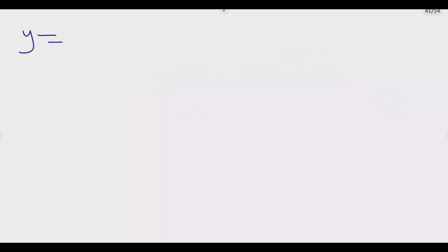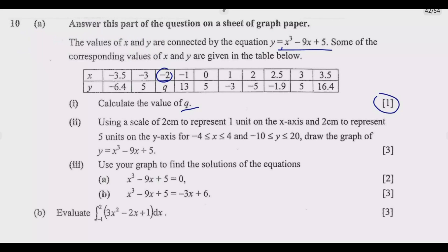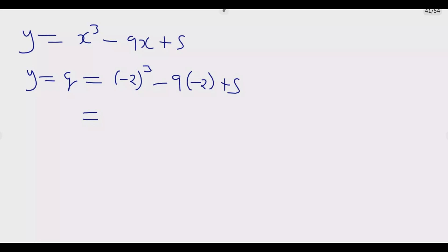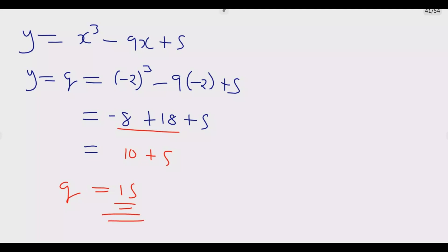We know y = x³ - 9x + 5, and the value of x is -2. So we substitute: y = Q = (-2)³ - 9(-2) + 5. Make sure you put -2 in brackets. This gives us -8 + 18 + 5, because negative times negative is positive. Simplifying: 10 + 5 = 15. So Q equals 15. Once you do that, you get that one mark.